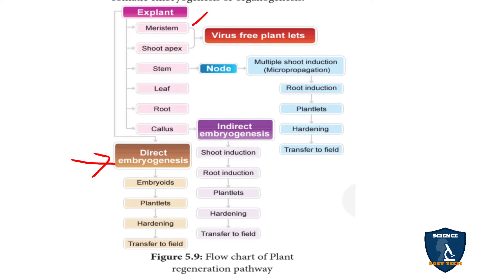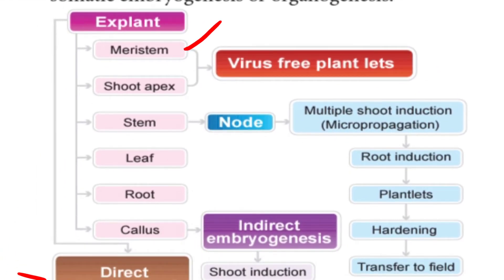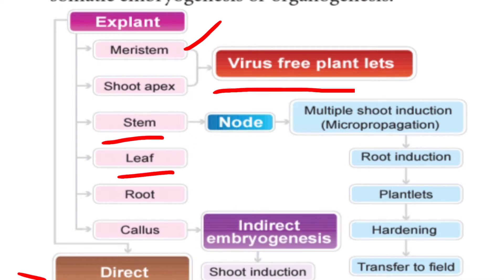And from the explant, you can see the meristem and the shoot apex. This meristem and shoot apex, taken from the explant, can be used for virus-free plantlets. Next, from the stem, leaf, root, and callus — from the nodal region of the stem, multiple shoot induction, that is micropropagation, can take place. From that, the root can be induced.